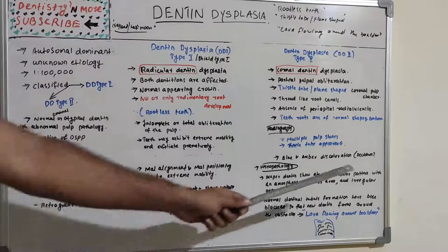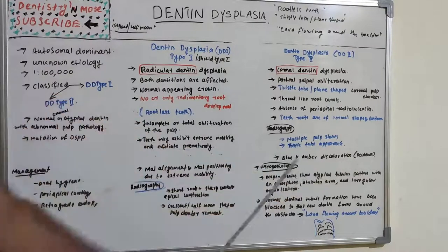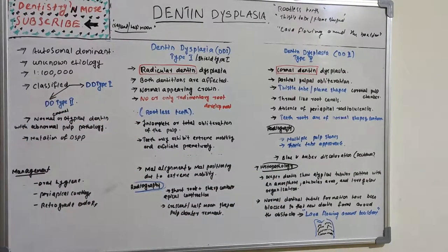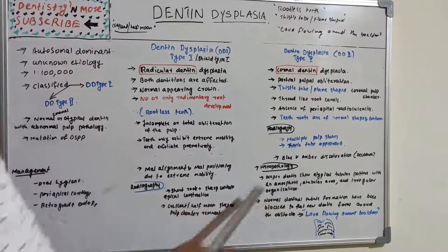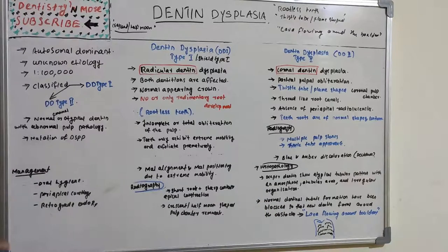Blue and amber discoloration is seen in dentine dysplasia Type 2, but only with the deciduous dentition. The permanent dentition appears normal in color, whereas the deciduous dentition shows blue and amber discoloration.